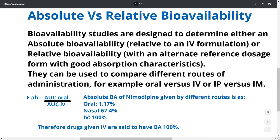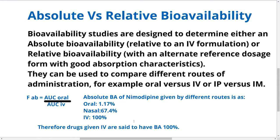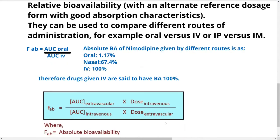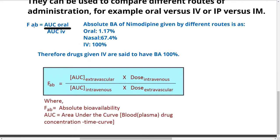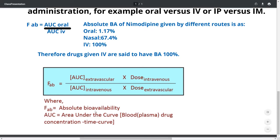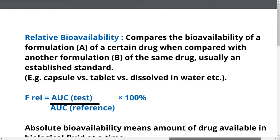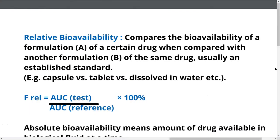Absolute bioavailability, denoted as F(abs), is calculated as AUC of the extravascular route divided by AUC of the IV route. For example, the absolute bioavailability of nimodipine given by different routes is: oral route 1.17%, nasal route 67.4%, and IV route 100%. Therefore, drugs given by the IV route are said to have 100% bioavailability. If different doses are given, you multiply by the IV dose in the numerator and the extravascular dose in the denominator. AUC stands for area under the curve.